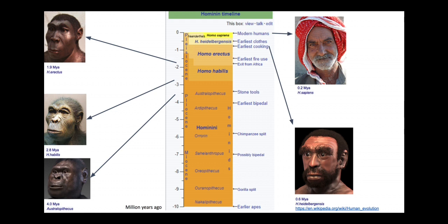Ape-like ancestors, for example Australopithecus, Homo habilis, and Homo erectus, were other lineages that preceded the human lineage that we now all belong to.